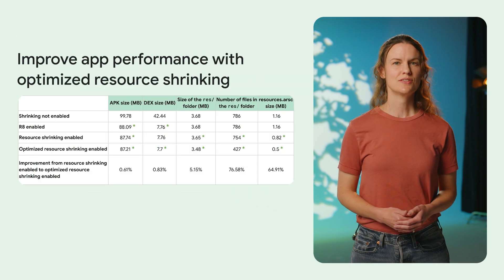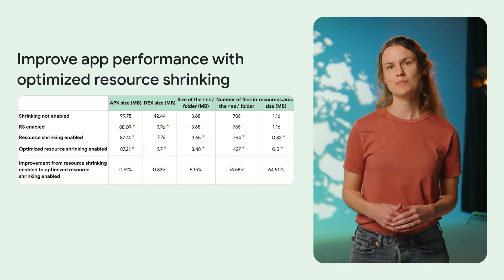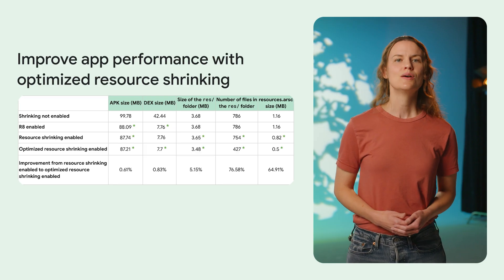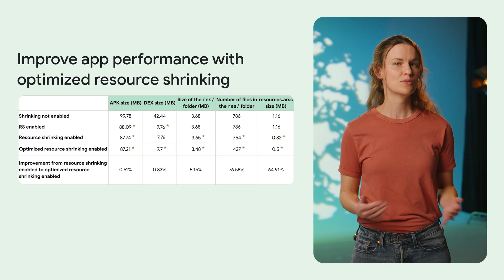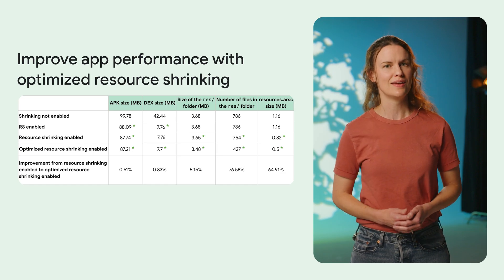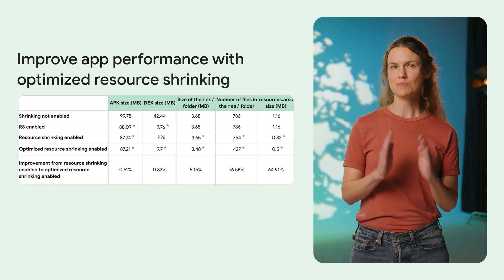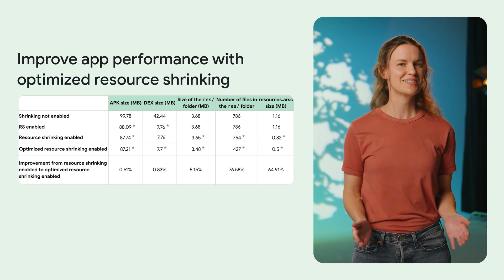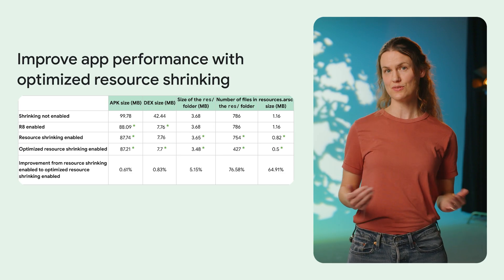R8 streamlines your app by removing unused code and resources, rewriting code to optimize runtime performance, and more. With AGP 8.12, we improved resource shrinking in R8. Opt in to make your app smaller, leading to smaller downloads, faster installations, and less memory used on your users' devices.